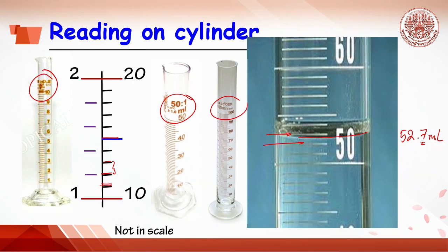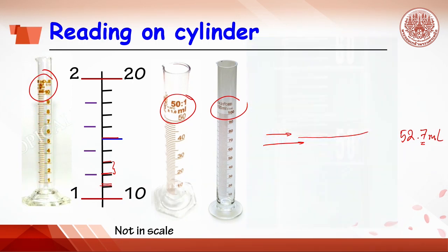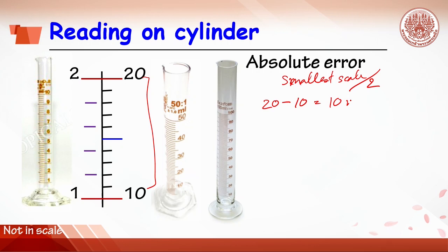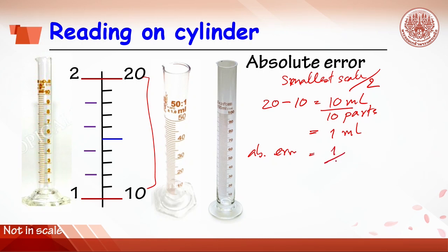The quality of a measuring device is determined by its absolute error, calculated as half of the smallest scale. Start by finding the smallest scale of the device. For this cylinder, the range from 10 to 20 ml is divided into 10 parts, giving a smallest scale of 1 ml. The absolute error is 1 divided by 2, which equals 0.5 ml. This means the cylinder can report up to 1 decimal place.